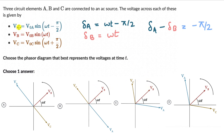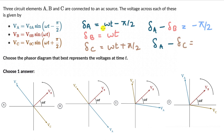Now if we look at circuit elements A and C, the phase of C is omega t plus pi by 2. So delta A minus delta C: omega t cancels off, leaving minus pi by 2 minus pi by 2, which is minus pi. So the phase difference between A and C is pi — meaning they should be in opposite directions, which is what we see in option B, where C and A are in opposite directions. So the right answer is option B.